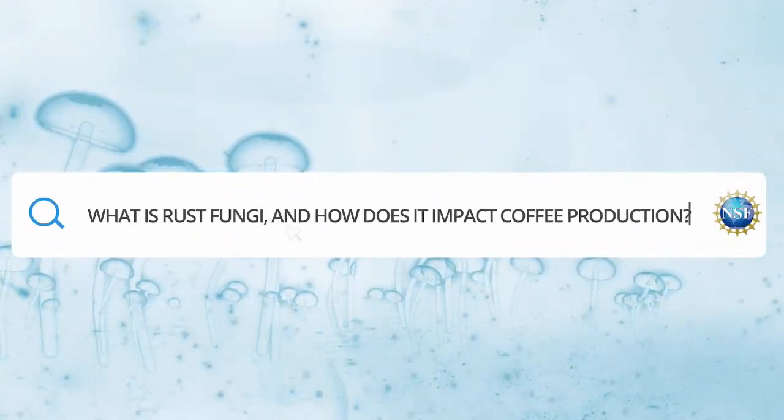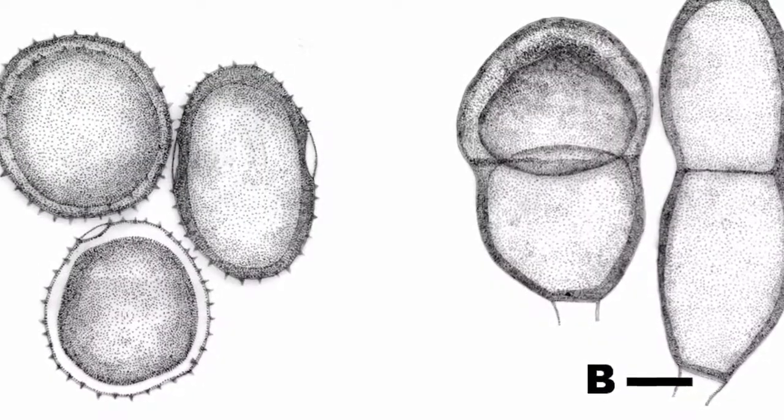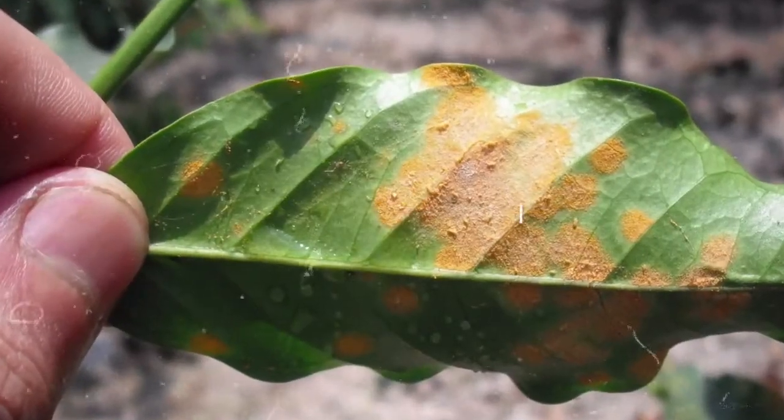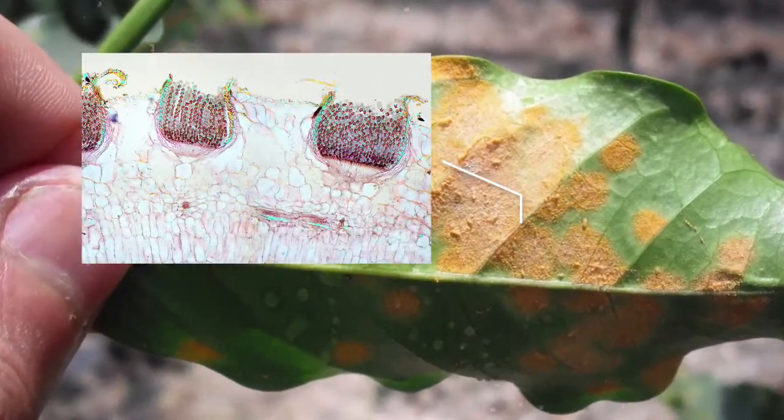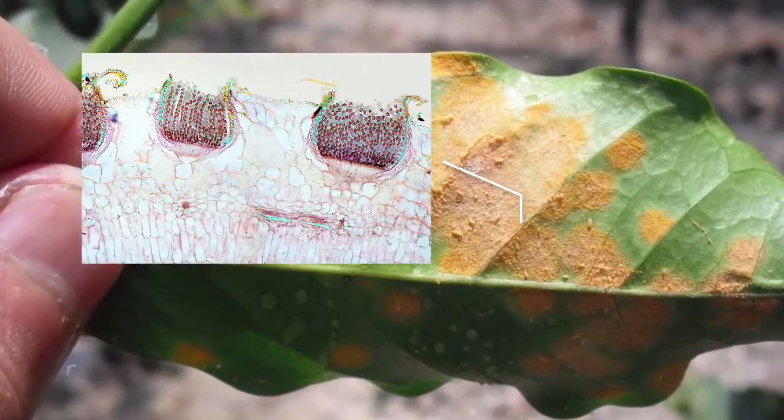Rust fungi is another group. When we talk about cordyceps, we're talking about a whole bunch of fungi. Rust fungi is a whole big group of fungi that infect plants — what we call obligate pathogens of plants. As a group they infect almost all of our most important crops: wheat, corn, coffee, for instance. The rusts that cause disease are also very host-specific, like cordyceps.